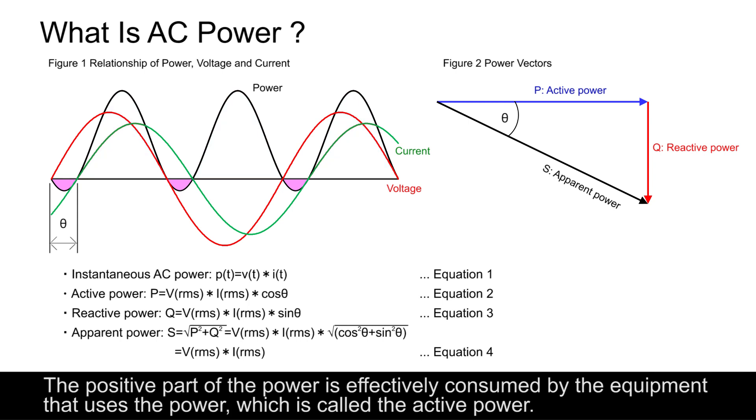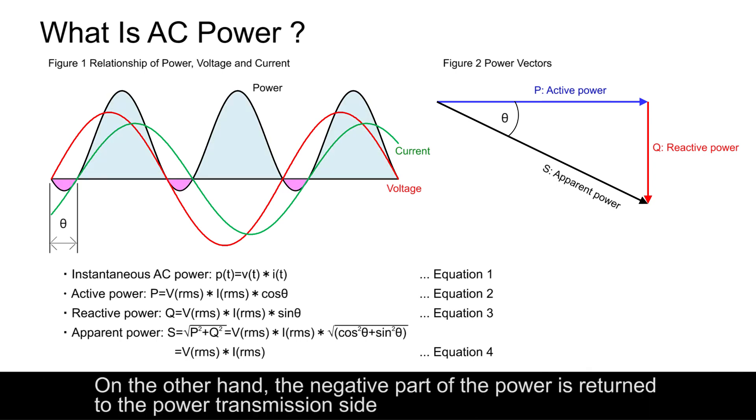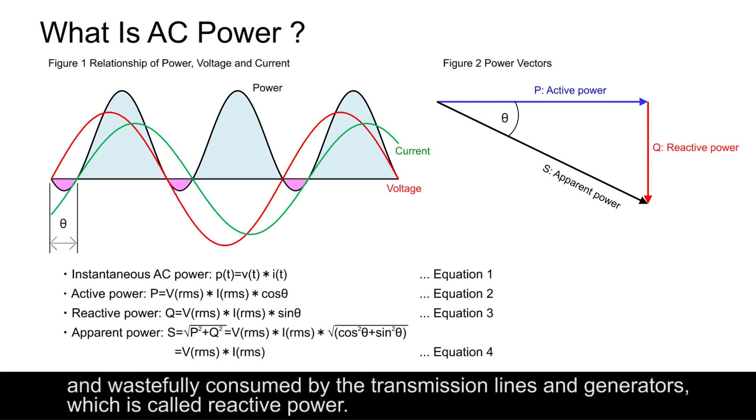The positive part of the power is effectively consumed by the equipment that uses the power, which is called the active power. On the other hand, the negative part of the power is returned to the power transmission side and wastefully consumed by the transmission lines and generators, which is called reactive power.